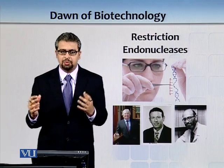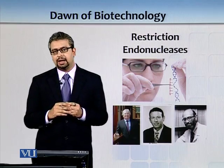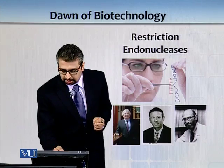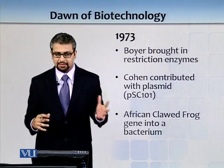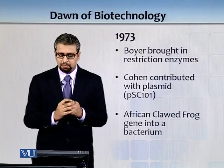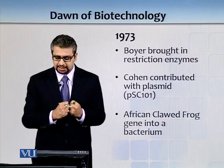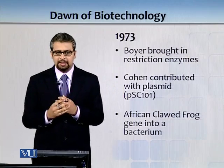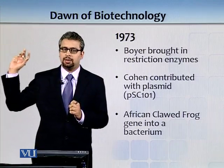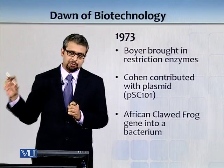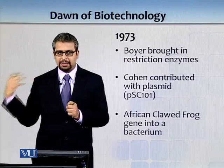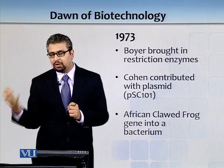Restriction endonucleases cut DNA, allowing scientists to pick a gene of their choice and insert it elsewhere. In 1973, Herbert Boyer met Stanley Cohen at a conference. Boyer brought restriction enzymes while Cohen contributed plasmid PSC-101, which carried tetracycline resistance. Plasmids are extra-chromosomal DNA floating in the cytoplasm of a bacterium, replicating independently of the chromosome.